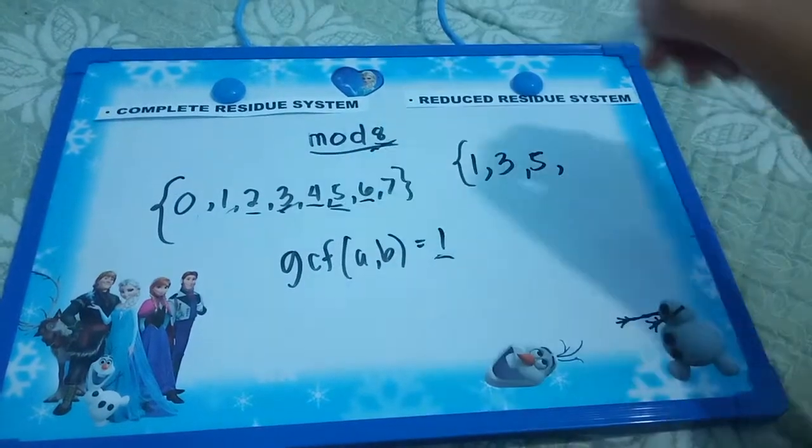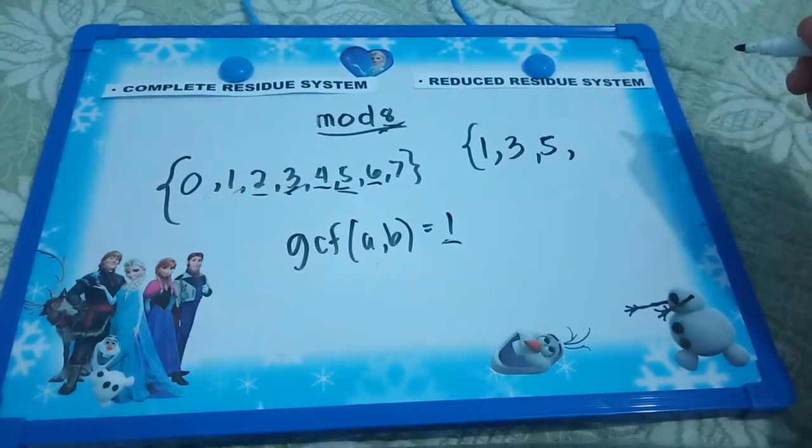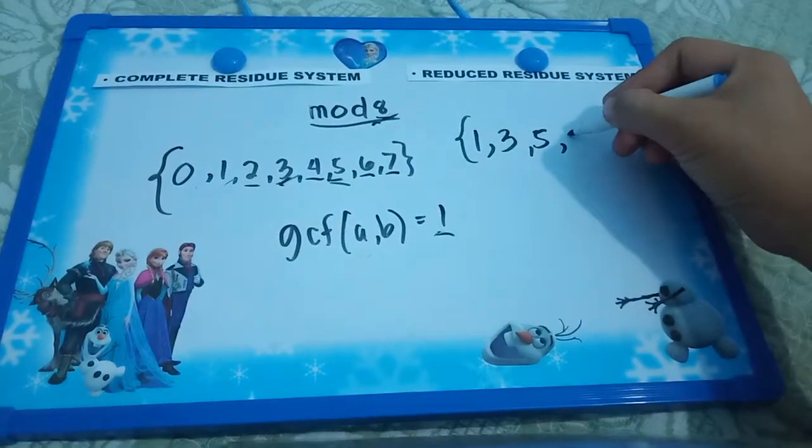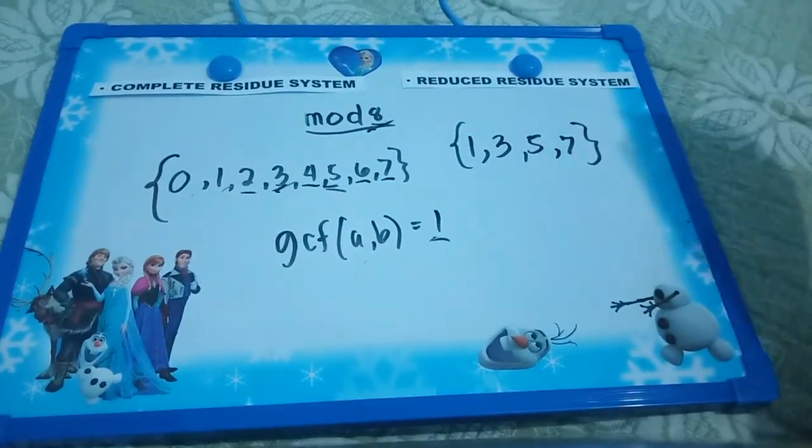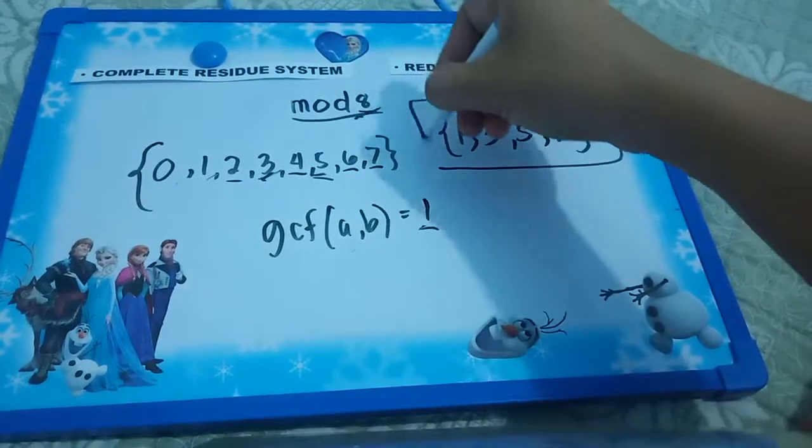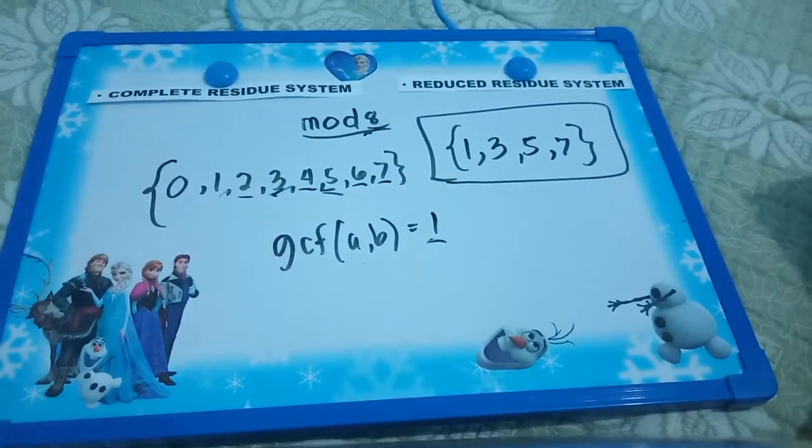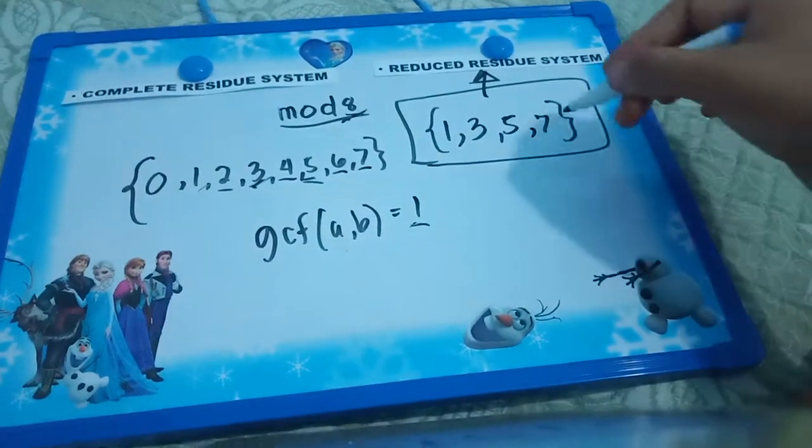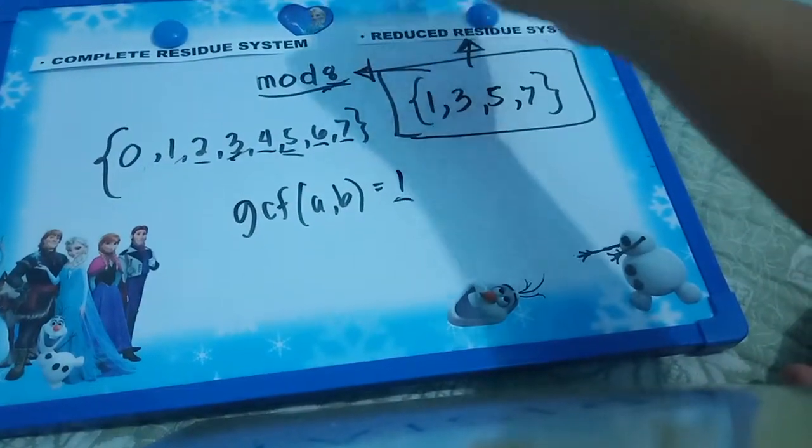How about 6? No, because they have a common factor, which is 2. 7? Yes, they are relatively prime. So this 1, 3, 5, 7 are what we call the reduced residual system of our mod 8.